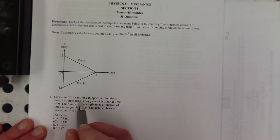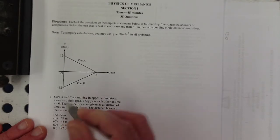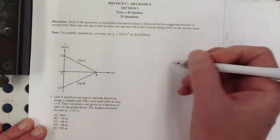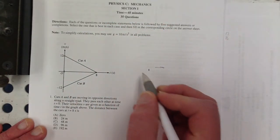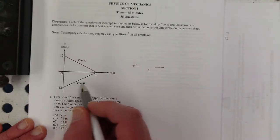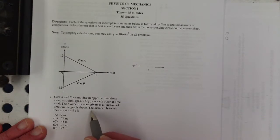I've got cars A and B are moving in opposite directions along the straight road. They pass each other at time zero, so at this time they are at the same place. Car A is going in the positive direction, and car B is going in the negative direction. It looks like they're both slowing down. At their velocities, the distance between the cars at time eight.